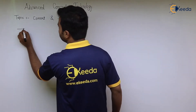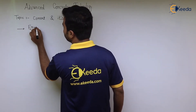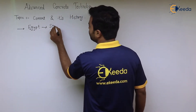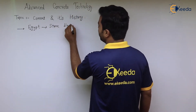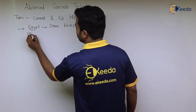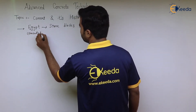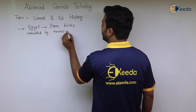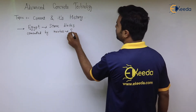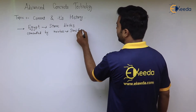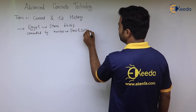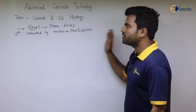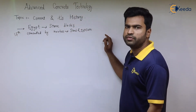The history of cement starts with Egypt. We have traces that stone blocks were cemented using mortar, and that mortar was made of sand and gypsum. This was in the 17th century, and it is the first trace of cement that we have in history.